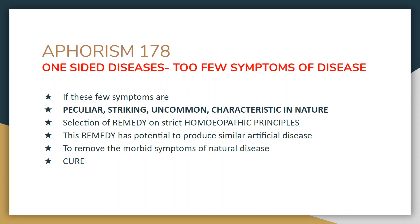Disease curing power lies in the disease producing power. Even though there are few symptoms, if they correspond to a remedy which in its proving and pathogenesis has generated such symptoms in the prover — listed in homeopathic materia medica — then it surely cures by removing the morbid symptoms of the natural disease. The artificial disease produced by the remedy takes hold of the patient, and he no longer experiences the morbid symptoms of the natural disease; the pathway to cure is achieved soon.